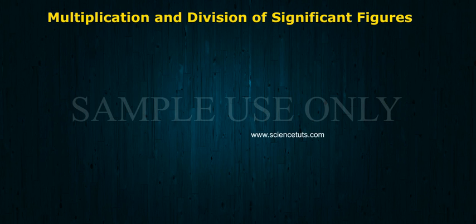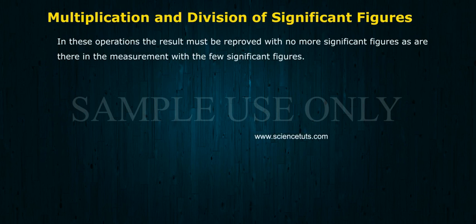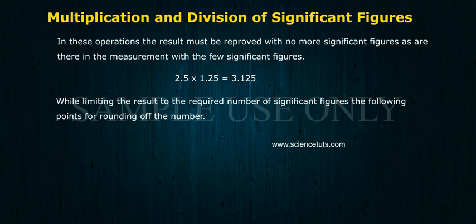Multiplication and division of significant figures: In these operations, the result must be reported with no more significant figures as are there in the measurement with the fewest significant figures. Example: 2.5 × 1.25 = 3.125. While limiting the result to the required number of significant figures, the following points for rounding off the number.